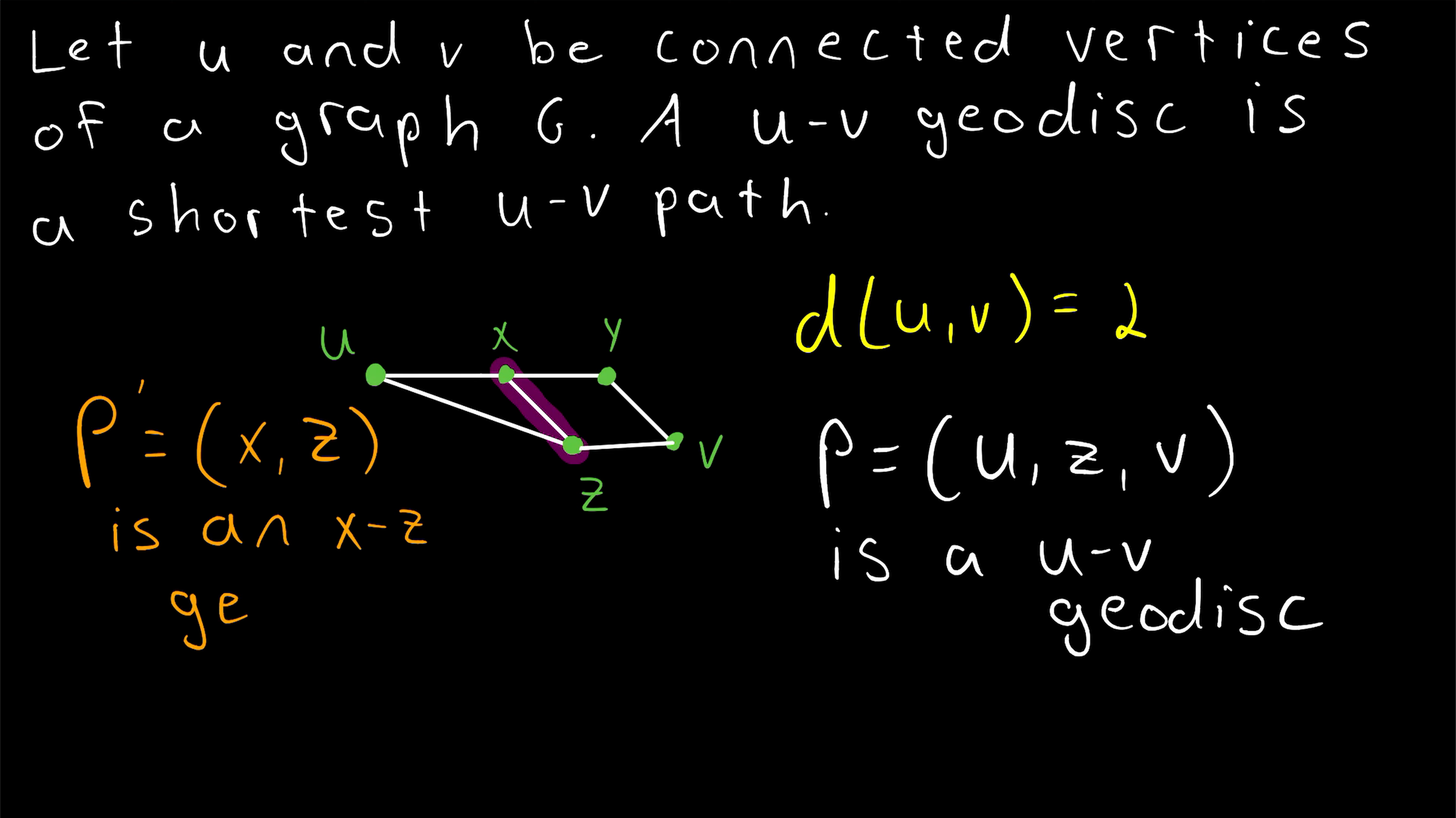Again, a geodisc connecting two vertices is a shortest path connecting those vertices. And so, a geodisc connecting two vertices, by definition, has a length equal to the distance between those two vertices, which is pretty handy. So I think it's a great term. If you want a u-v path that has a length equal to the distance of u and v, you can just say, let P be a u-v geodisc. Then, by definition, P is a shortest u-v path. So I hope this video helped you understand what geodiscs are in graph theory. Let me know in the comments if you have any questions, need anything clarified, or have any other video requests.